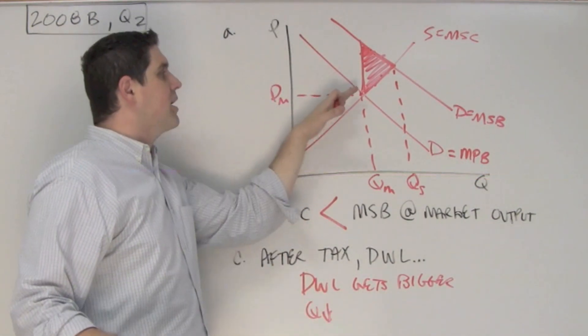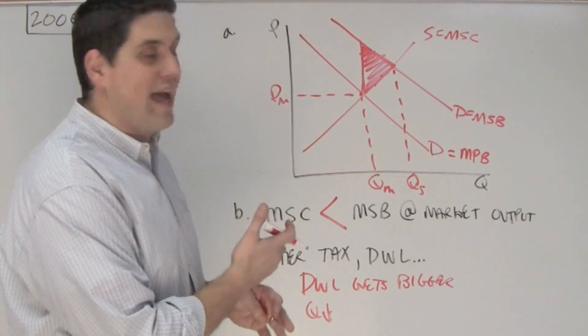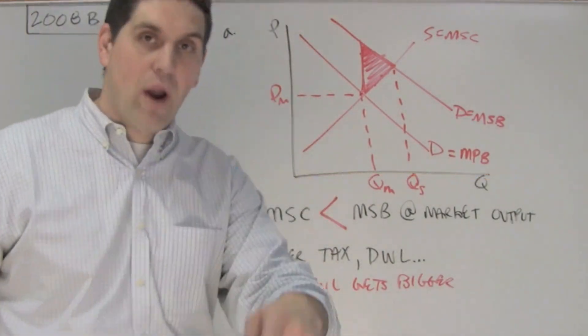And the reason why is because the quantity decreases. If the quantity decreases because there's a tax, that's going to lead to larger deadweight loss and less efficiency in this actual market. That's the free response out of six. Add it all up. See how you did? Try the next free response.